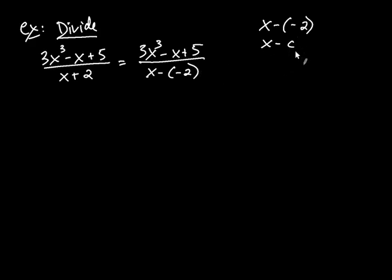So in other words, this is a synthetic division candidate. Okay, so once you establish that, here's what you do. You take the c, so in this case you take the negative 2, and you simply write it on the outside. No x, just the number negative 2, which is always the c.